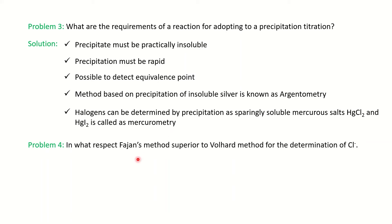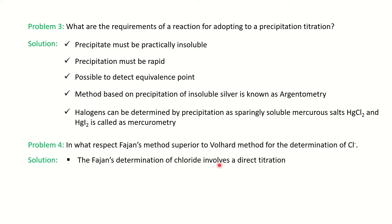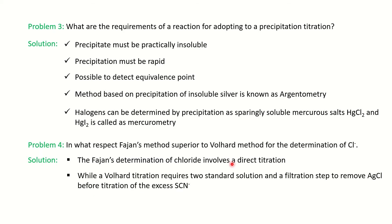Next question: in what respect is Fajans' method superior to the Volhard method for determination of chloride? There are three methods — Mohr's, Volhard, and Fajans' (also called the adsorption indicator method). First, Fajans' method involves a direct method of determination, while Volhard uses a back titration method. Second, Volhard titration uses two standard solutions and a filtration step to remove AgCl before titrating with excess thiocyanate. This is why Fajans' method is superior to Volhard.